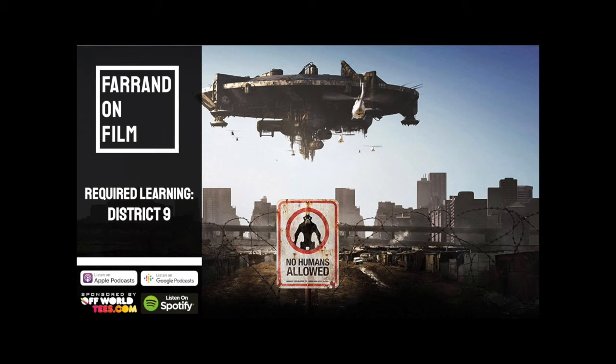As Wikus' transformation continues he becomes more heroic: he escapes the lab, bravely joins Christopher in an assault on MNU, and finally sacrifices himself so that Christopher and his son can escape. At the same time the other humans become more and more inhumane. The revelation of the labs where they experiment on the aliens, and the single-minded pursuit of Wikus by Venter, are all good examples of this.